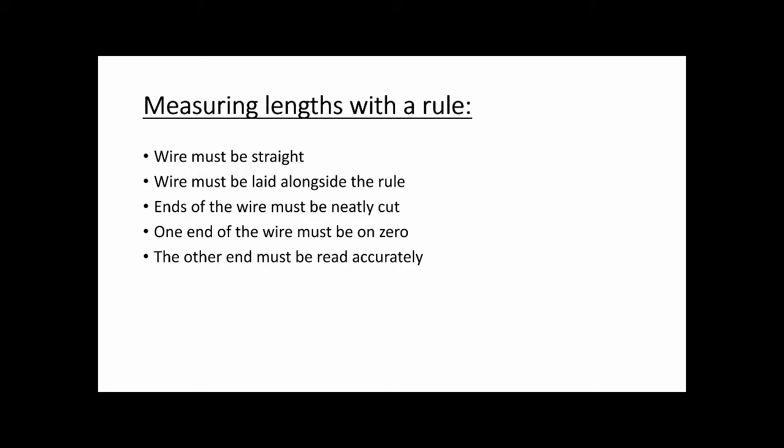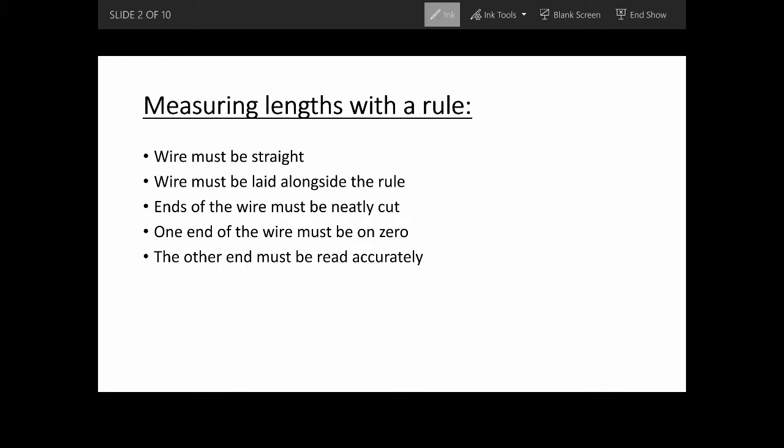The first point is to know how to measure lengths with a rule. These must be memorized. First, the wire must be straight. The wire must be laid alongside the rule. The ends of the wire must be neatly cut. One end of the wire must be on zero and the other end must be read accurately.